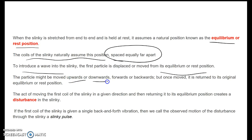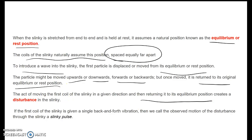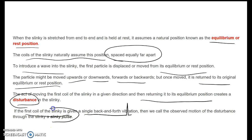We can move it upwards or downwards, forwards or backwards, but once we move it, we let it go and it will return to its original equilibrium or rest position. When we move the first coil in a given direction and then it returns to its equilibrium position, we do what is called making or causing a disturbance in the slinky.